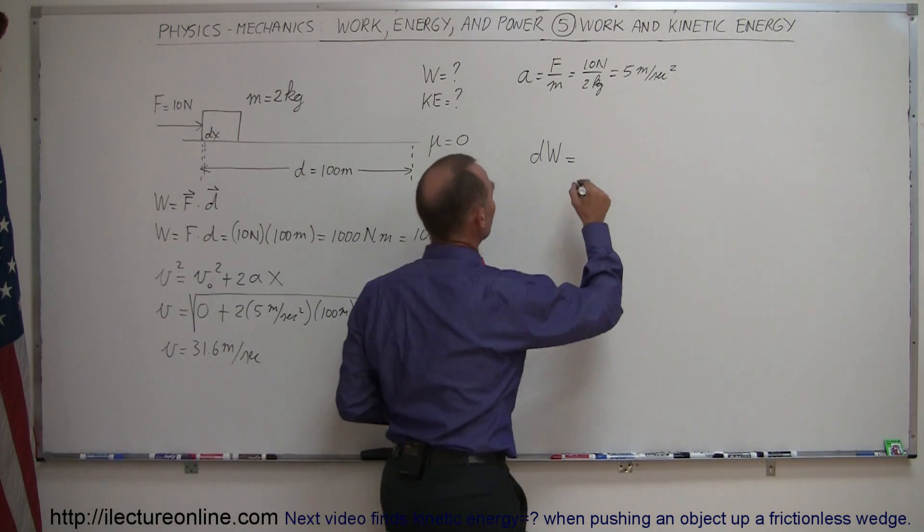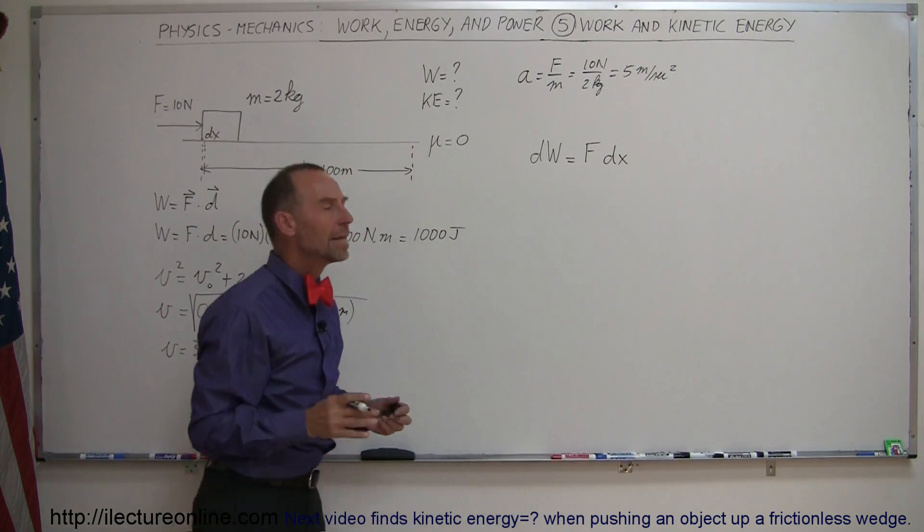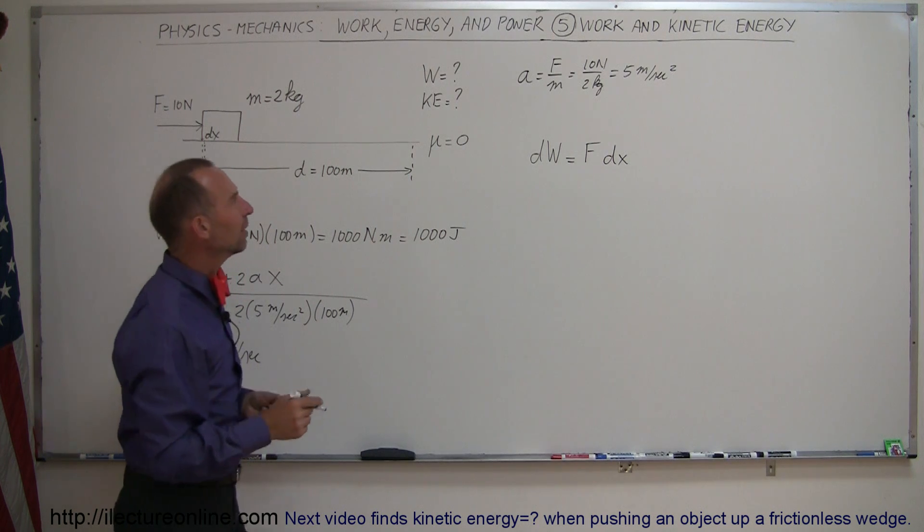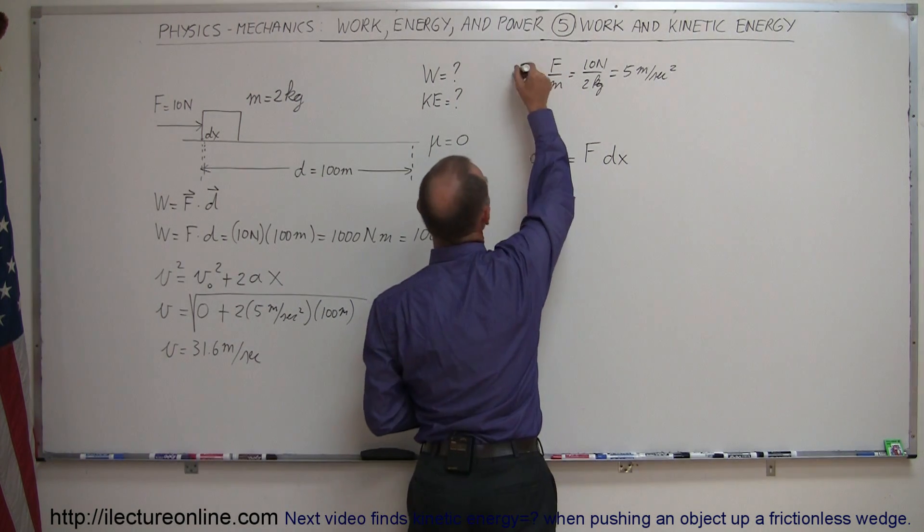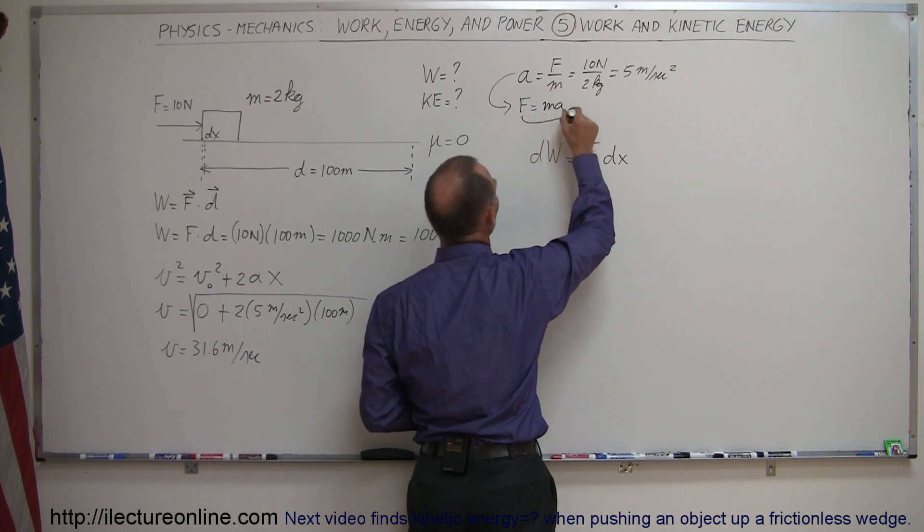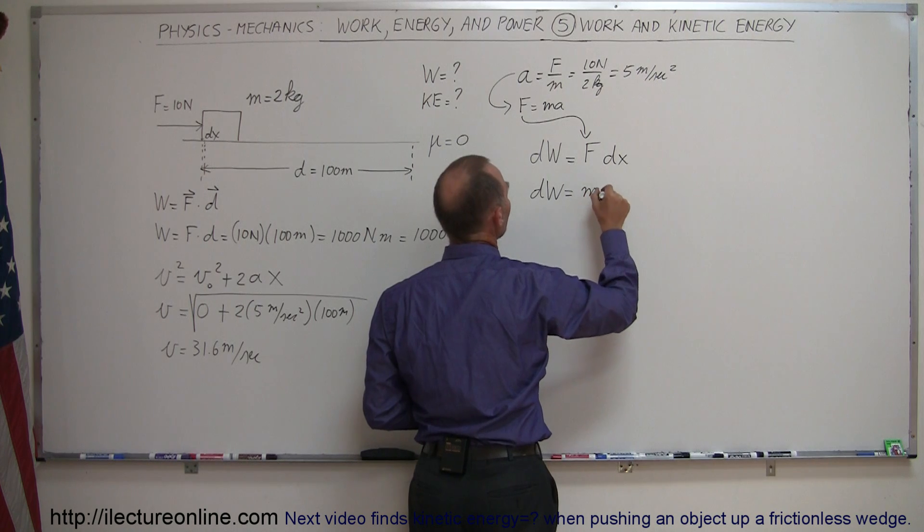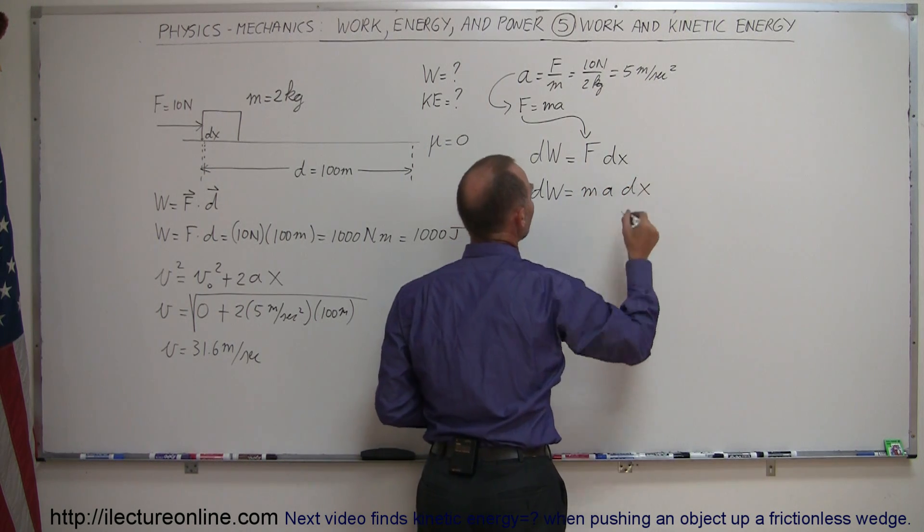And that small amount of work will be equal to the force applied to the block times the small amount of distance that we achieved, dx. And if we then use Newton's second law, and write f equals ma, and replace the f by ma right there, we can then write that dW is equal to m times a times dx.